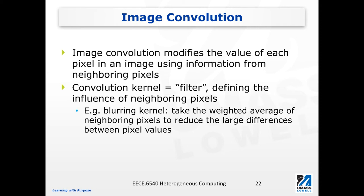For example, we can apply a blurring filter. In the blurring filter, we essentially take the weighted average of neighboring pixels so that we can reduce the large differences between the pixel values, especially among neighboring pixels.